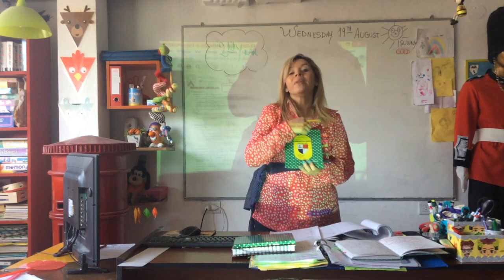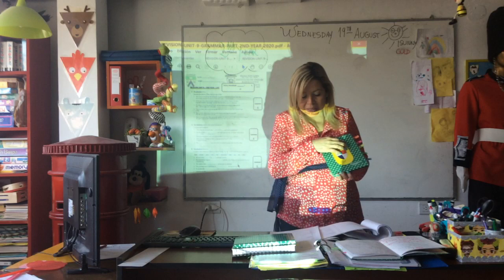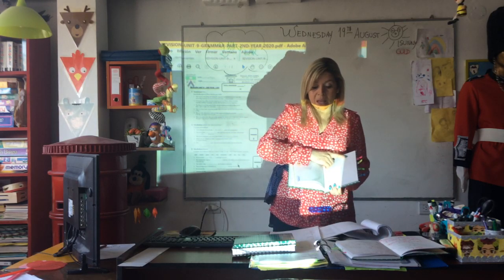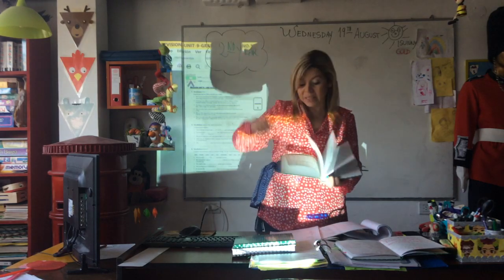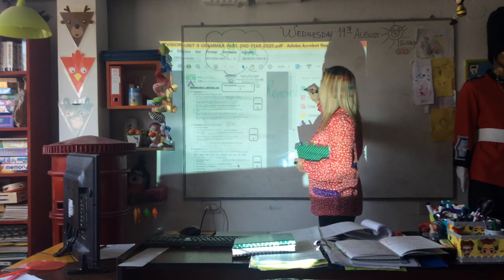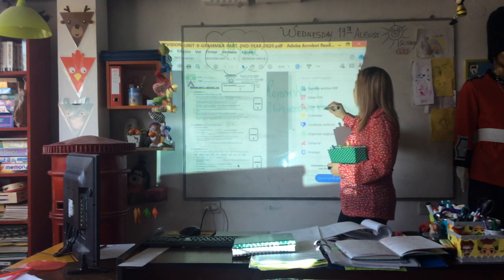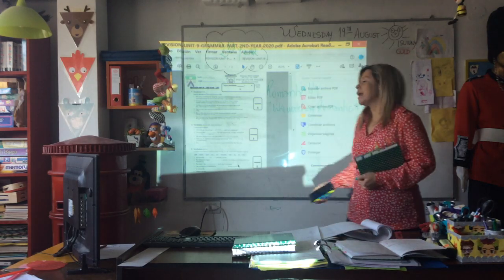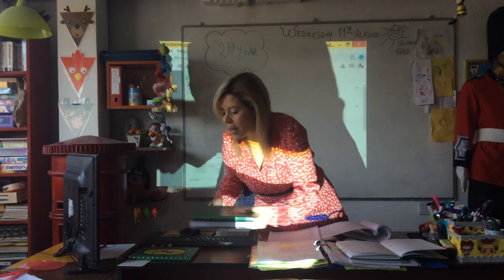¿Para qué servía el cuaderno de la A a la Z? Para que vos pongas todas las palabritas de vocabulario. Por ejemplo, aparecía 'animation' — vas a buscar la A y vas a poner la palabra 'animation' con un ejemplo. Si aparece 'romantic', vas a ir a la R, vas a poner 'romantic', unit nine, y vas a escribir: 'I like watching romantic films.' El que hace el trabajo a conciencia avanza; el que no, se queda en el pantano.